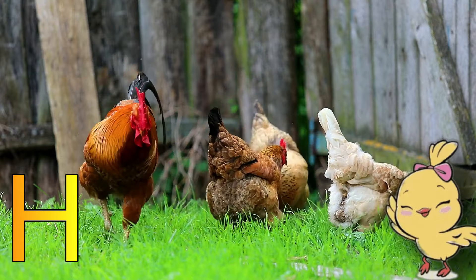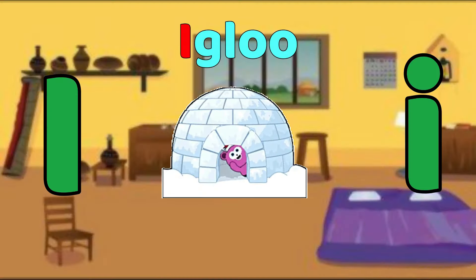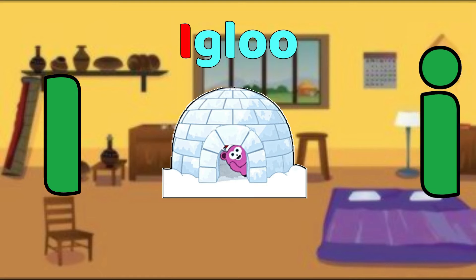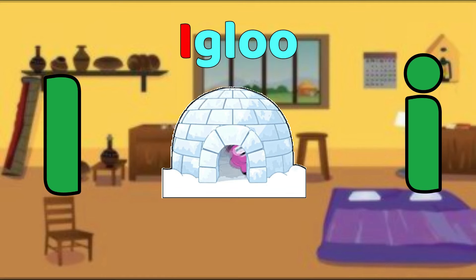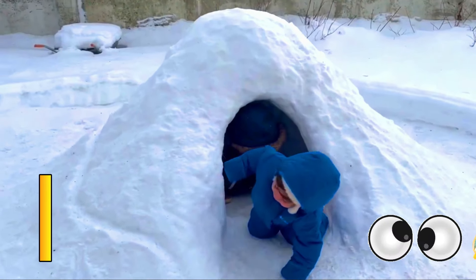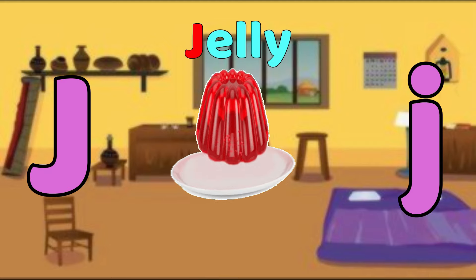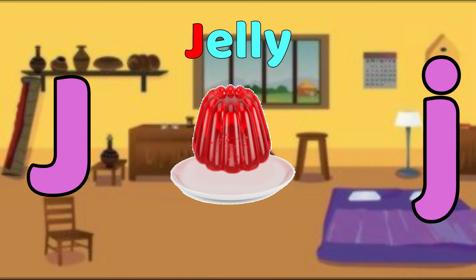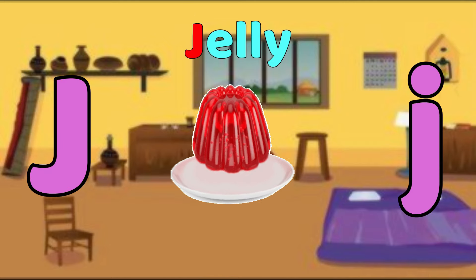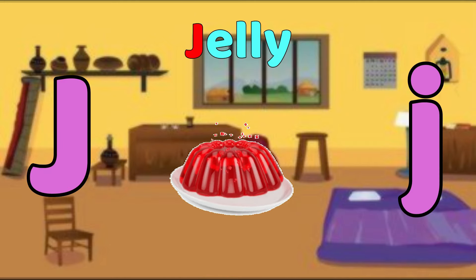I is for Igloo. E, igloo. E, igloo. I, igloo. J is for Jelly. J, jelly. J, jelly. J, jelly. J, jelly.